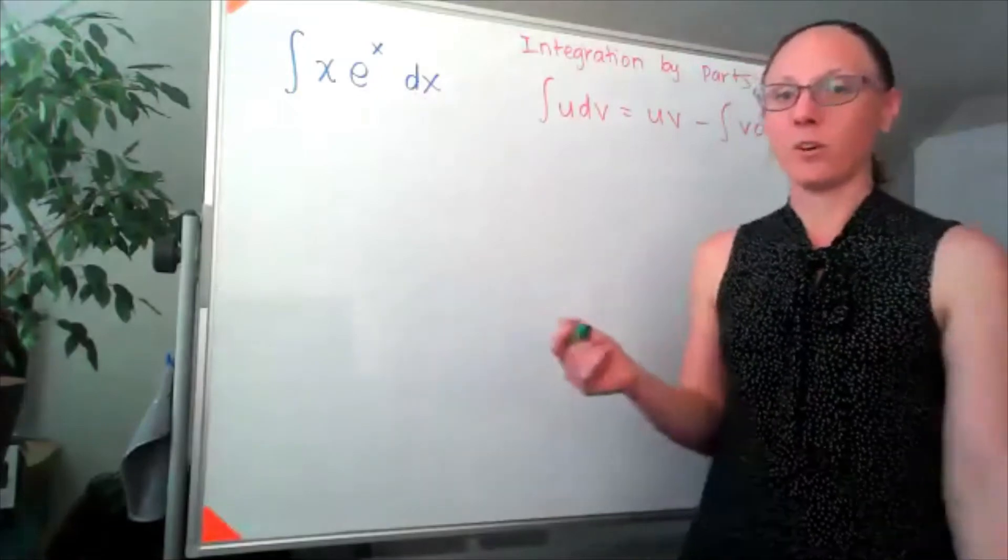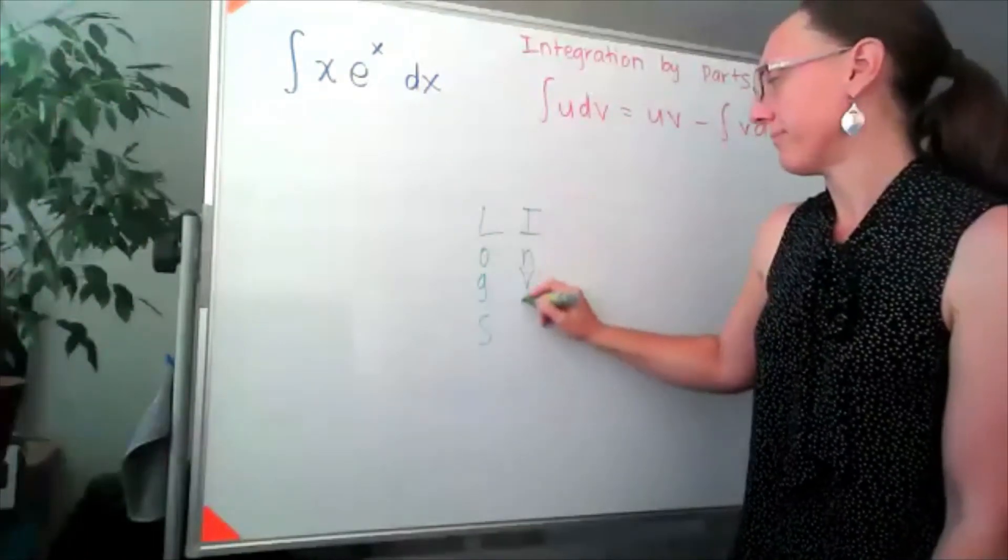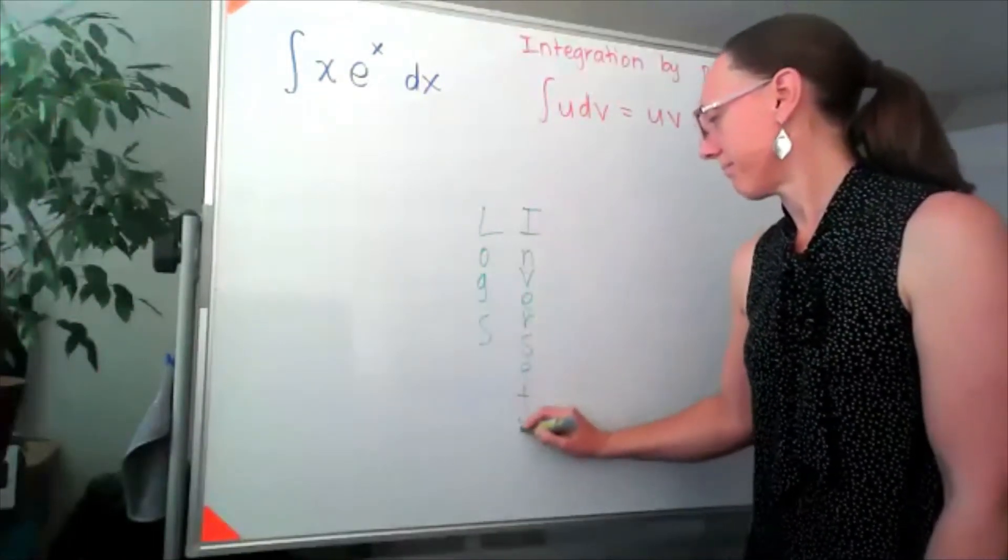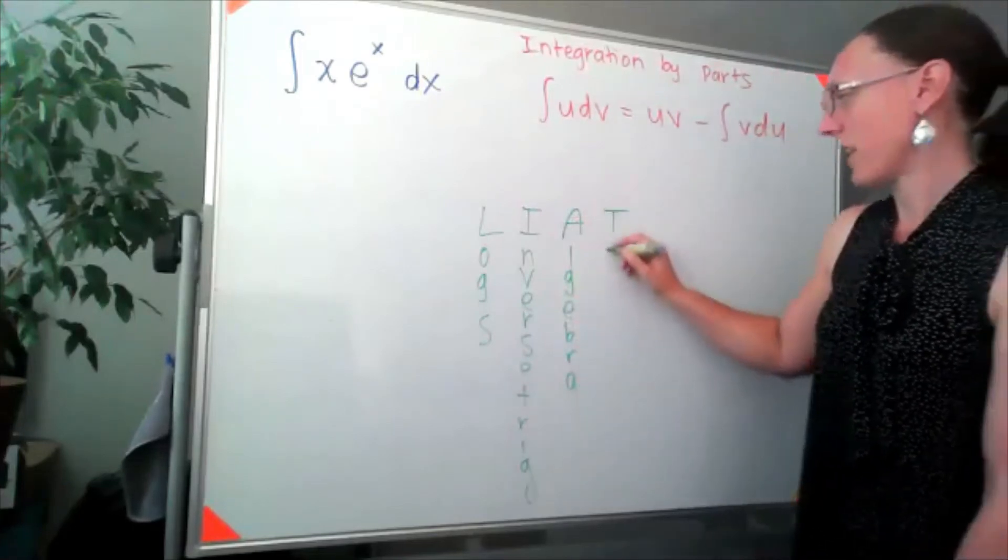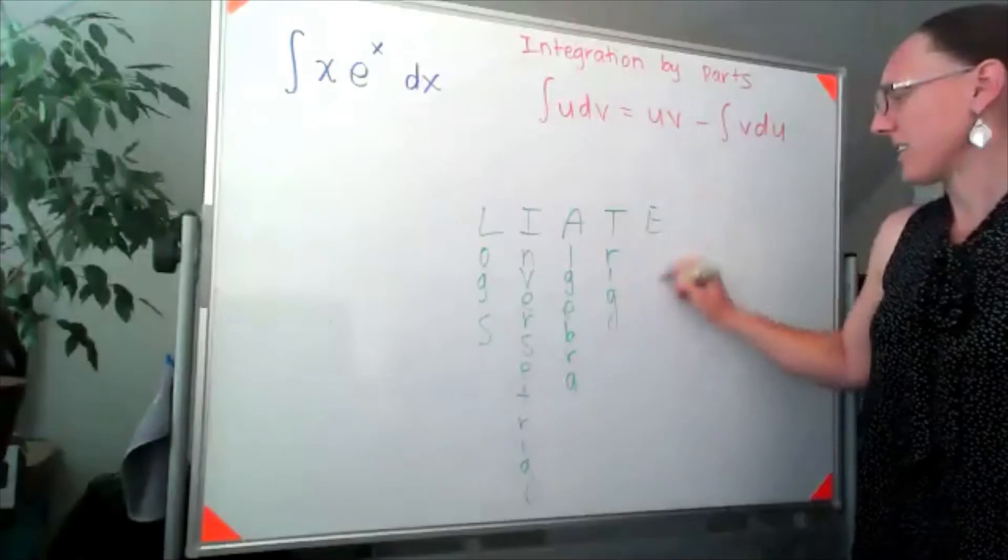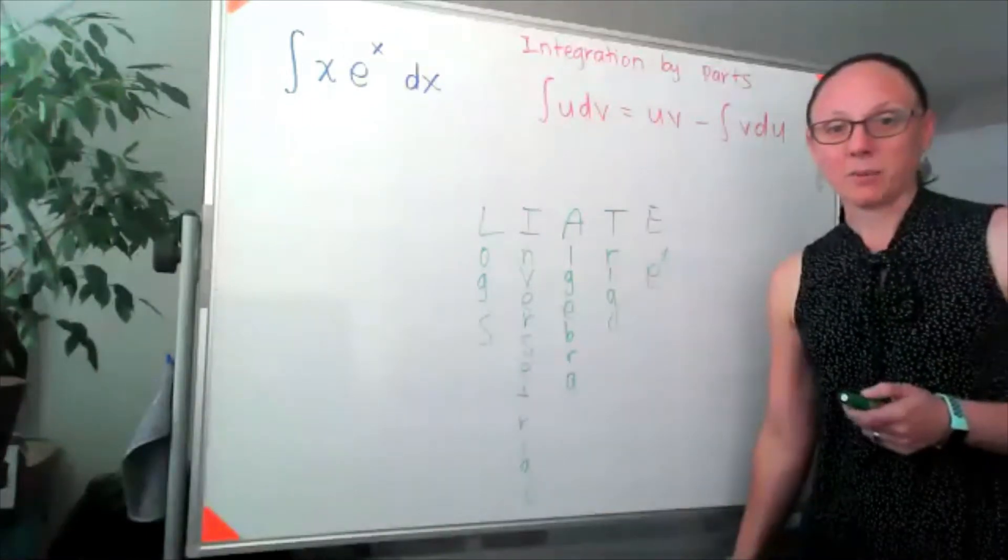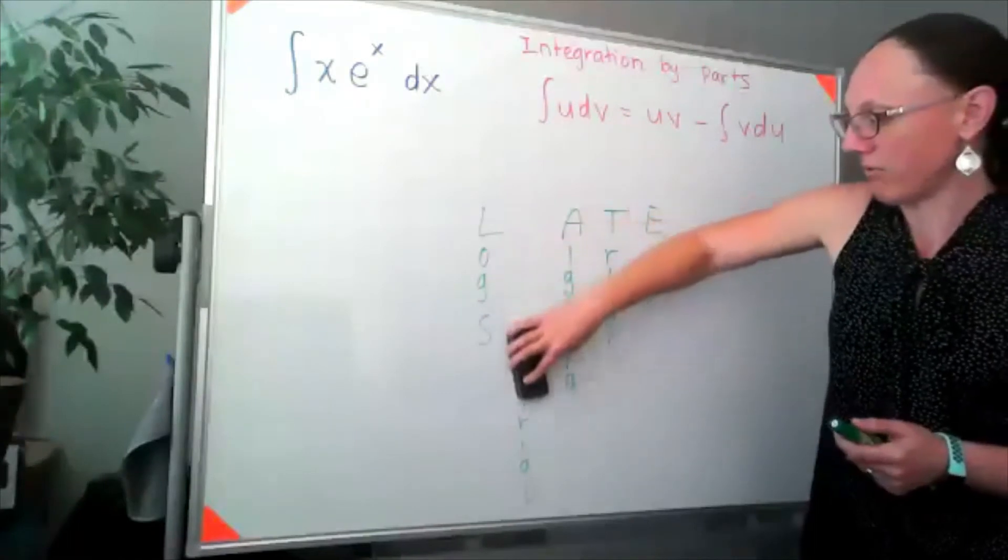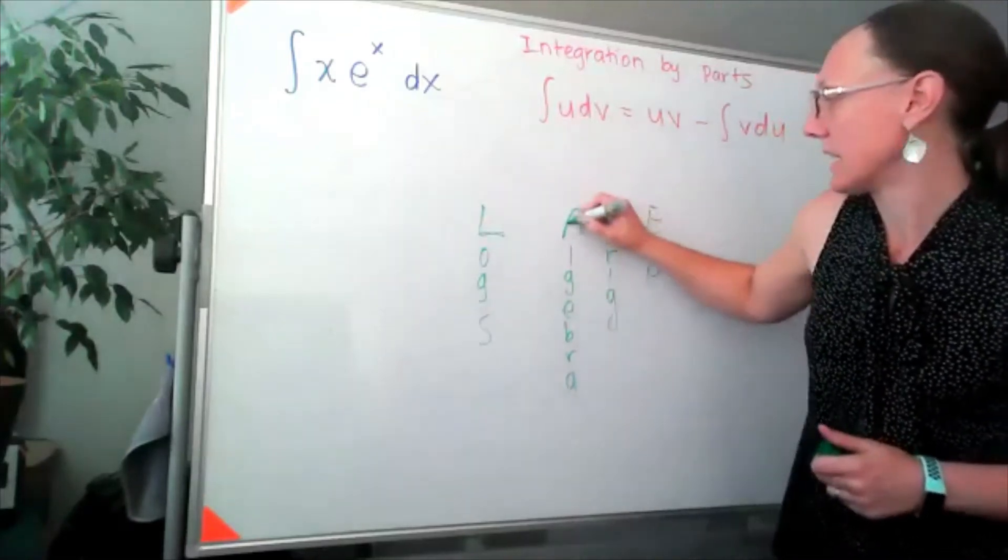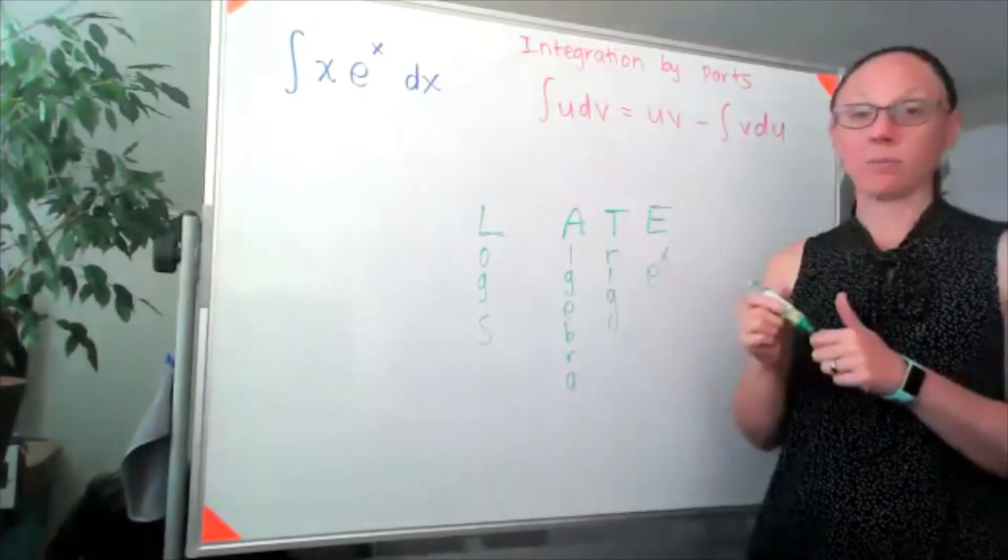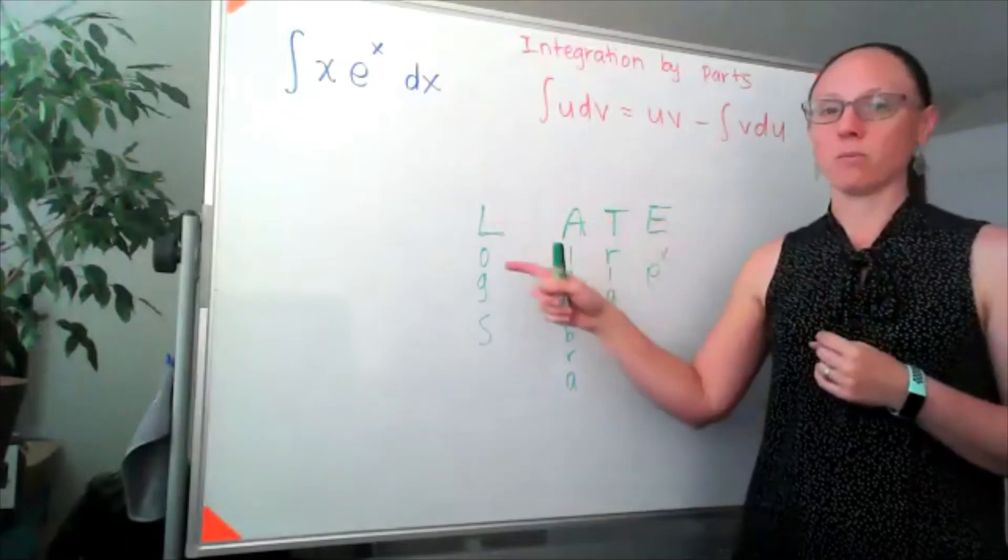So first we're going to list out all the things we know how to take derivatives of: logs, inverse trig, algebra, trig, and exponentials. Now most of the time in 17B, we don't often have to worry about the inverse trig, which leaves us with this nice acronym of LATE. And when I'm doing integration by parts, I'm thinking about what do I have and who comes first in the word LATE.